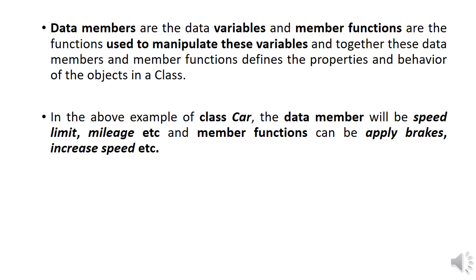A class holds data members and member functions. Data members are the data variables, and member functions are the functions used to manipulate these variables. These data members and member functions together define the properties and behavior of the objects in a class. For example, in the car class, data members are speed limit, mileage, etc., and member functions can be apply brakes, increase speed, etc.